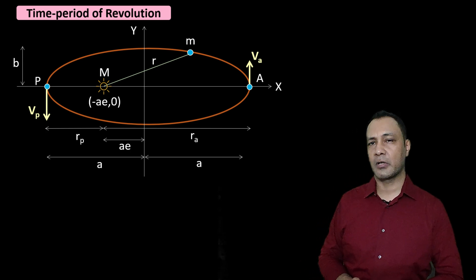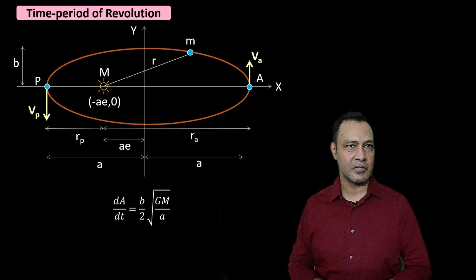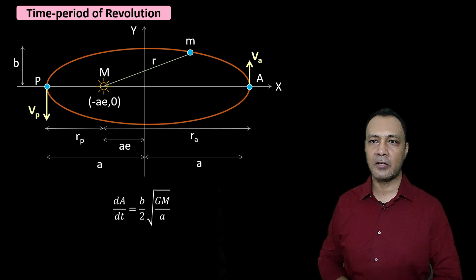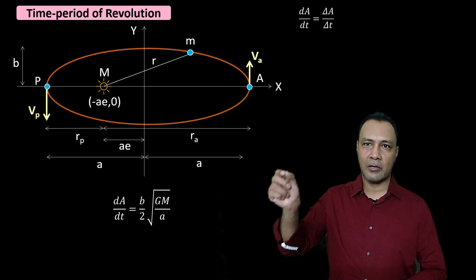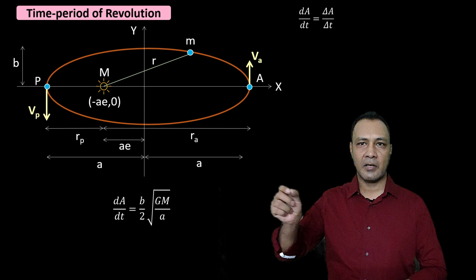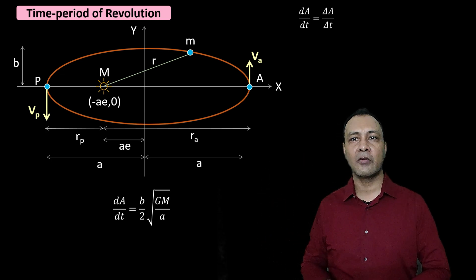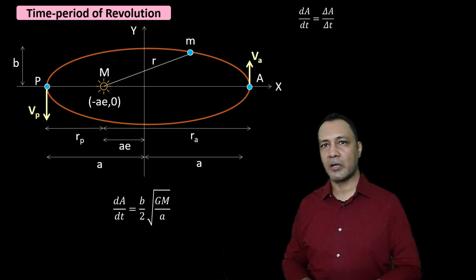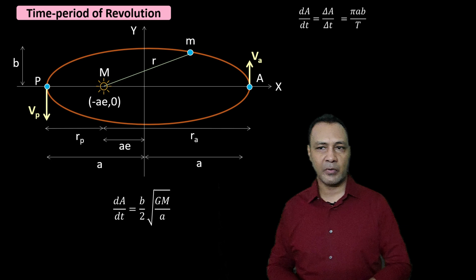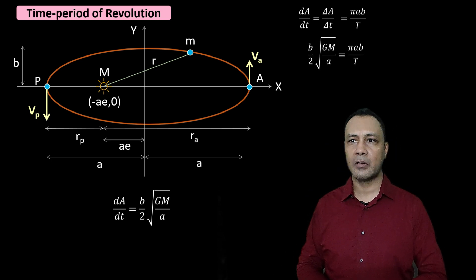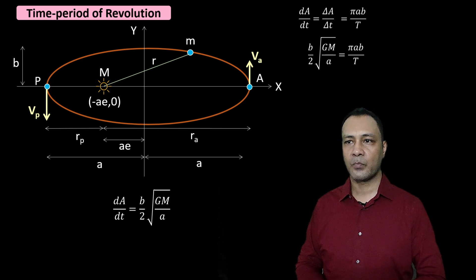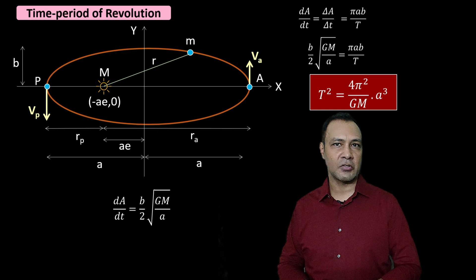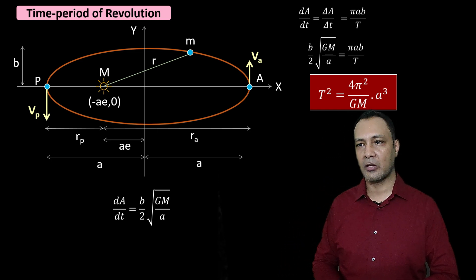Now the time period of revolution of a planet in the elliptical orbit. We have dA/dt = (B/2)√(GM/A). Since dA/dt is constant, the instantaneous rate equals the average rate, so dA/dt = ΔA/T. In one full revolution, the total area swept is π·A·B and time taken is T, so (B/2)√(GM/A) = πAB/T. Squaring and rearranging, we get Kepler's third law: T² = (4π² / GM) × A³, confirming T² is proportional to A³.